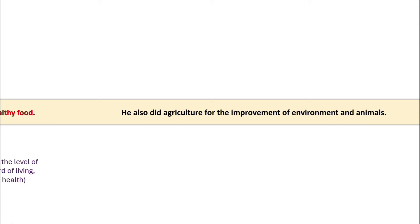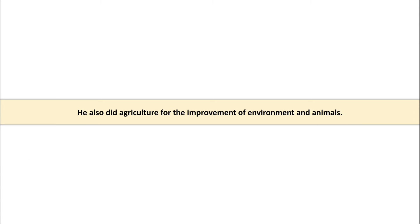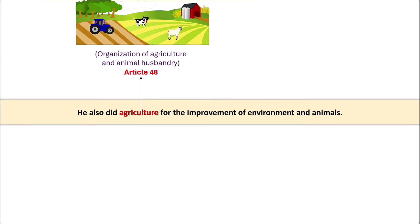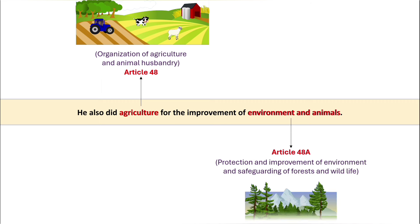After this, our director also did agriculture for the improvement of environment and animals. 'Agriculture' denotes Article 48 — organization of agriculture and animal husbandry. And 'environment and animals' denotes Article 48A — protection and improvement of environment and safeguarding of forests and wildlife. This statement covers two articles: Article 48 and 48A.